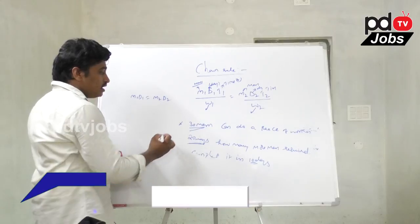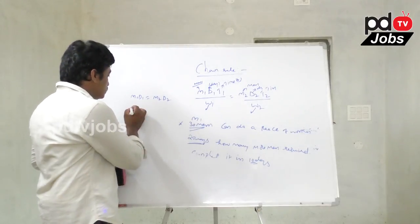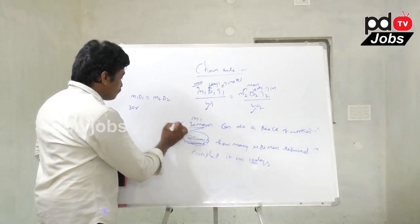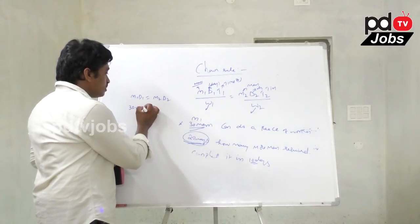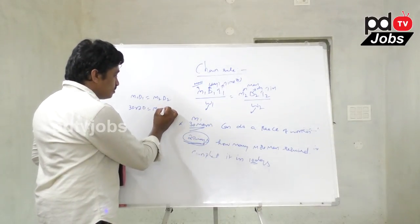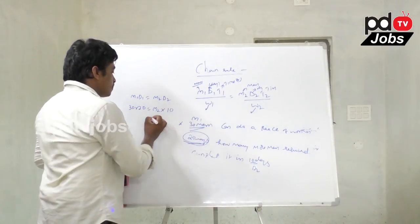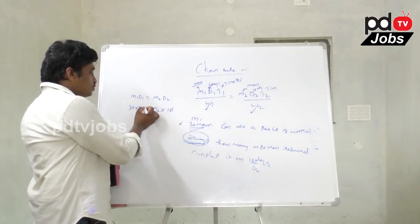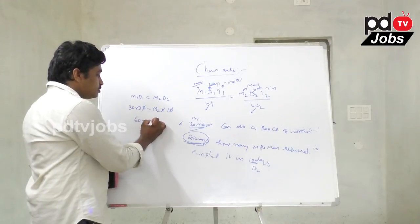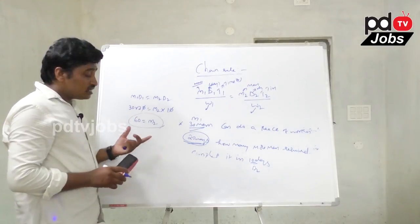Using the same formula: M1 = 30, D1 = 20, D2 = 10. So: 30 × 20 = M2 × 10. The 10 and 20 cancel to give a factor of 2, so 30 × 2 = 60. Therefore M2 is 60.